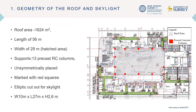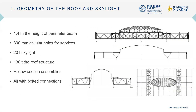The geometry of the structure: we have a roof area which is a rectangular one, marked with a hatched area. We can see the reinforced concrete columns indicated with the red squares, and the yellow marked area was the cutout for the elliptic skylight. The skylight had a width of 10 meters, a length of 27 meters, and a height of around 2.6 meters. The perimeter beam was set up at 1.4 meters due to some services, for which it was necessary to provide some cellular holes.